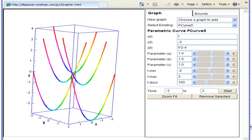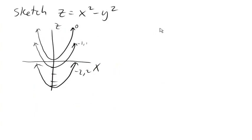So if we come back now and look at some traces in y and z, then when x equals 0, z is equal to negative y squared.